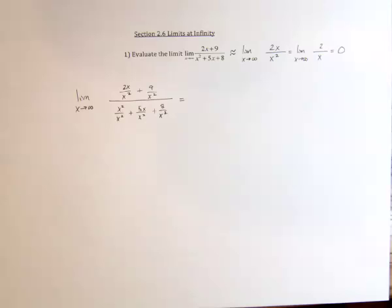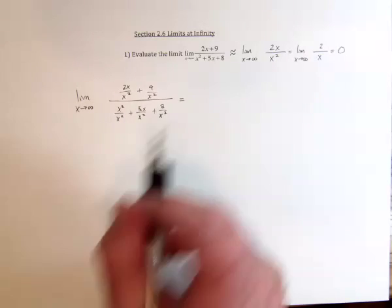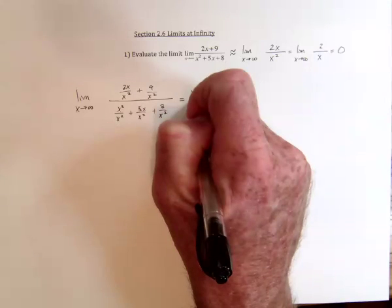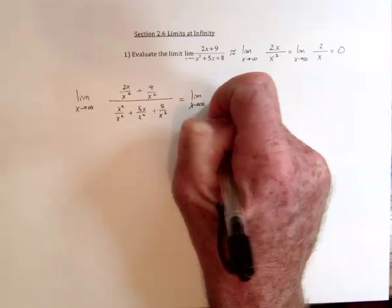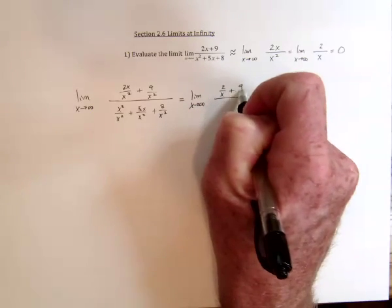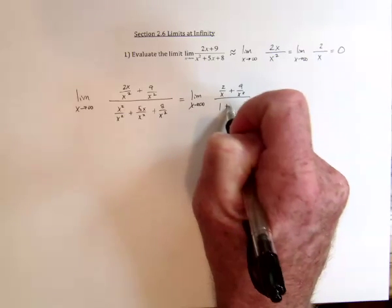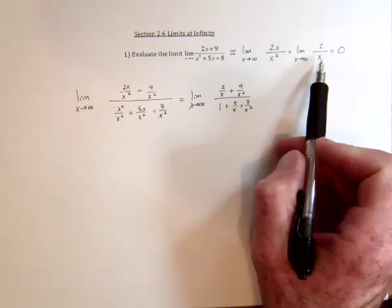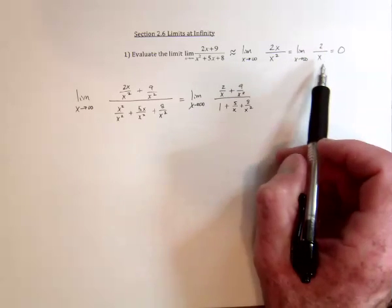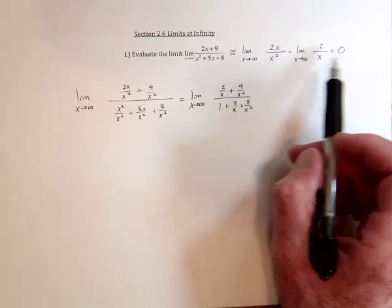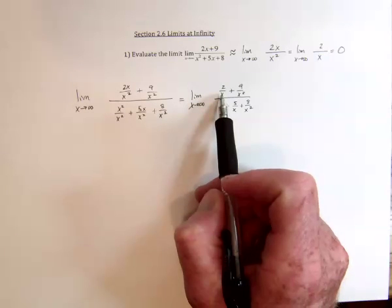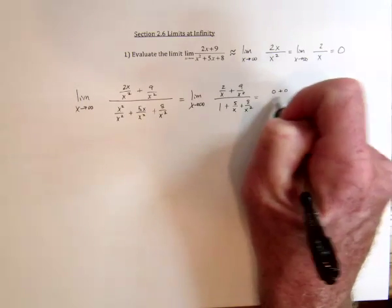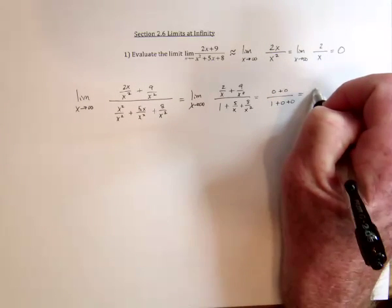The disadvantage of doing this is you have to write all of this extra stuff. But you don't have to write the squiggly equals because it's not an approximation — this is exact. Now reduce. We've got the limit as x goes to infinity, and it's going to be 2 over x and 9 over x squared in the numerator, and 1, 5 over x, and 8 over x squared in the denominator. Using the same logic — a constant divided into an infinite number of pieces is practically nothing — each of those terms becomes 0, and we get 0 plus 0 over 1 plus 0 plus 0, which is 0 over 1. And that is the same answer.